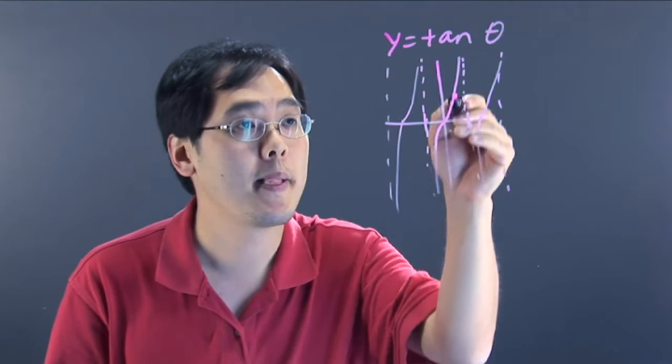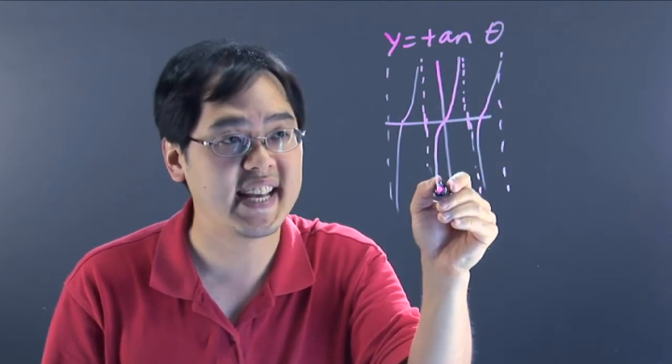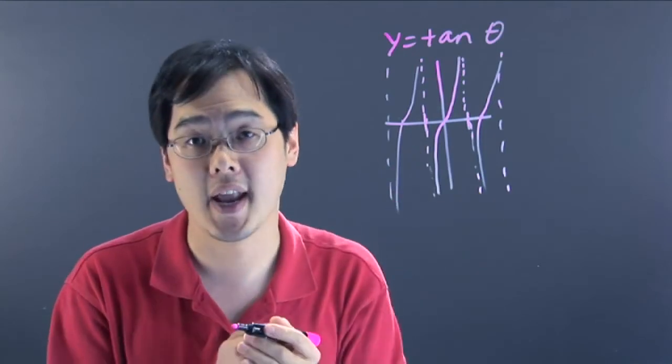So what that means here is the right tail that was pointing up is now going to be pointing down and the left tail that's pointing down is now going to be pointing up in the negative tangent.